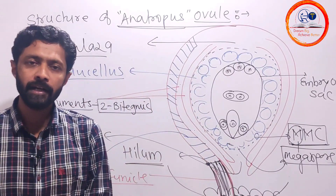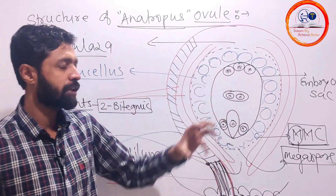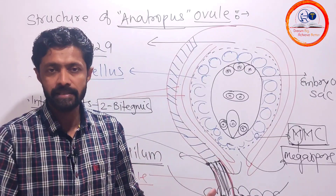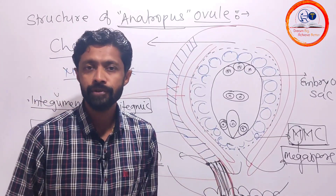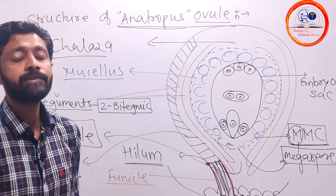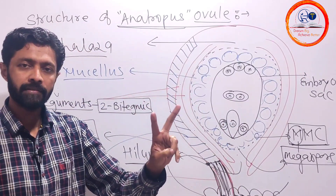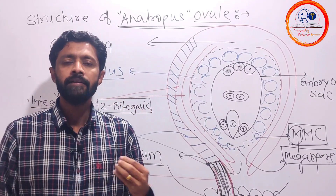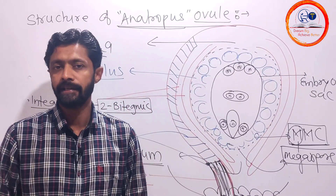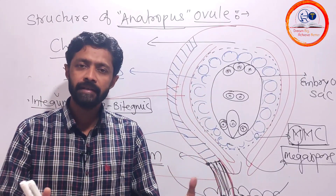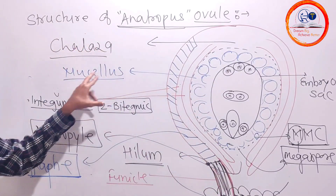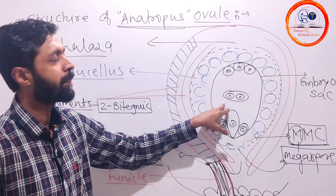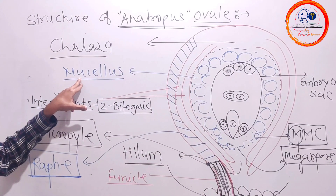The nucellus does important work — the female gametophyte develops inside it. If the nucellus is a tiny cell with fewer cells, we say it as tenuinucellate. If the nucellus has plenty of cells — abundant cells — we call it crassinucellate. The nucellus is considered as megasporangium proper because the actual megaspore and female gametophyte develop inside it.